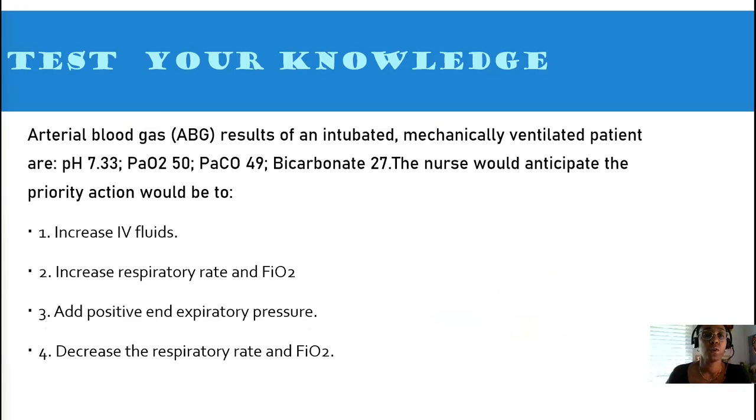Here's our next question. You have an ABG result of an intubated, mechanically vented patient. His pH is 7.33. His CO2 is 50. His O2 is 50. His CO2 is 49. Bicarb 27. The nurse would anticipate what priority action. You would definitely need to increase his respiratory rate and also his FiO2. He needs more oxygen. And he also needs to blow off that CO2.